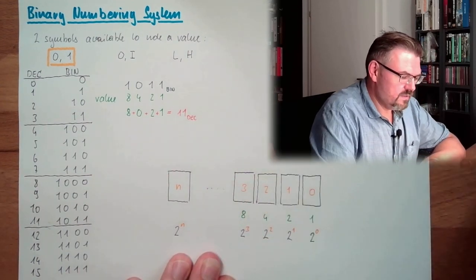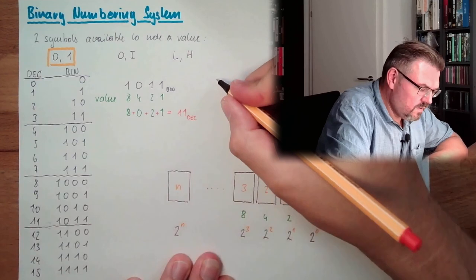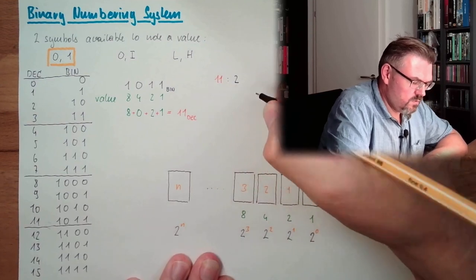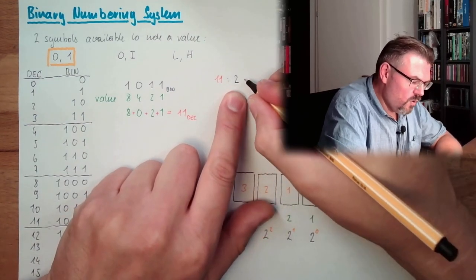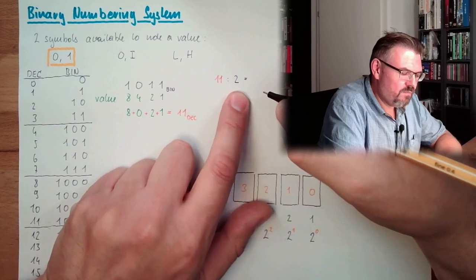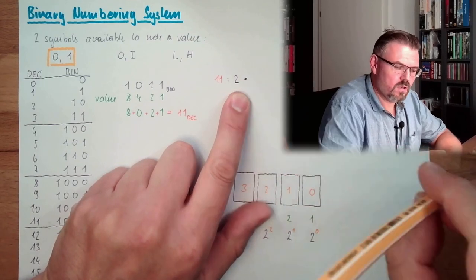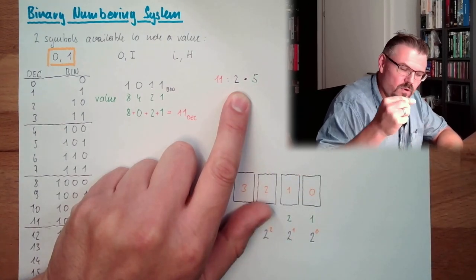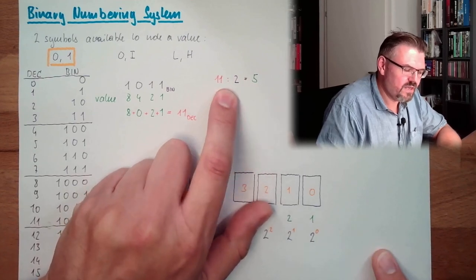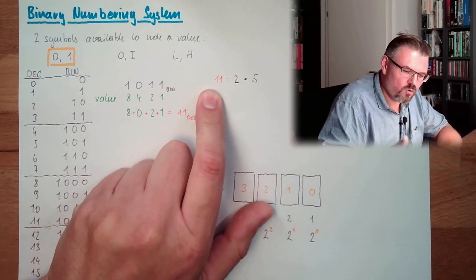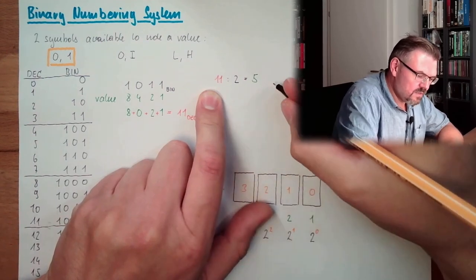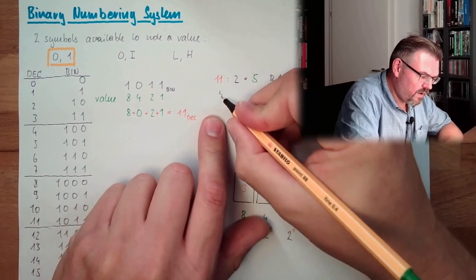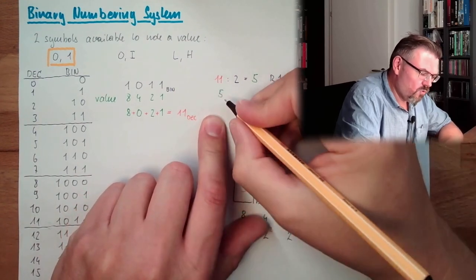And how to transfer a decimal number to a binary number? I will use here this 11. Then divide by 2, because 2 is binary system. What is this? 11 divided by 2 is 5. So we have 5, and we have a rest, we have a rest of the division, and this is 1. 2 times 5 is 10, and then there's 1 left over here, so we have rest 1.